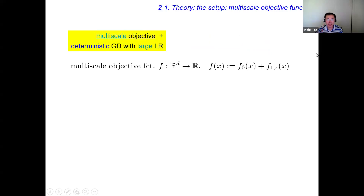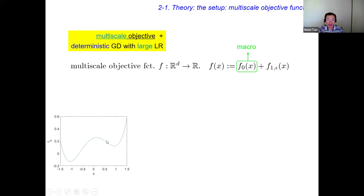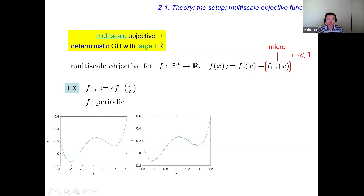What is going on? Our gradient descent is completely deterministic, but it nevertheless exhibits stochastic behavior. We do have a rigorous theory: if your objective function is multi-scale and your learning rate is large, then the dynamics of gradient descent is actually going to be chaotic, and that's why you see stochastic behaviors. By multi-scale objective function, I mean the objective function can be written as a superposition of a macroscopic potential plus a microscopic one indexed by a small parameter epsilon indicating the small scale.